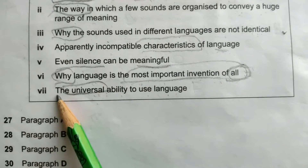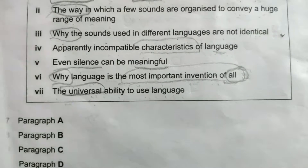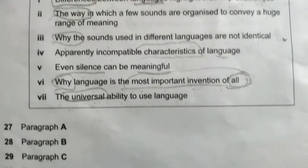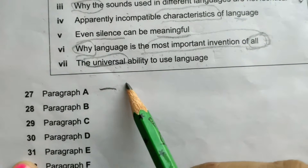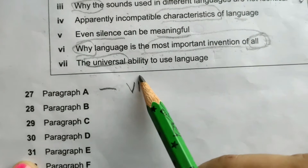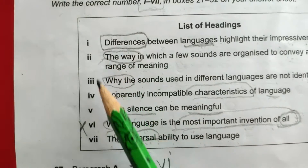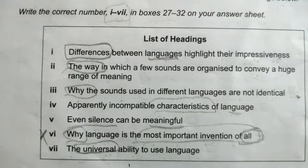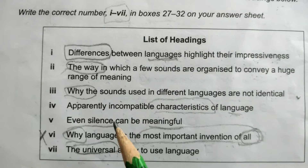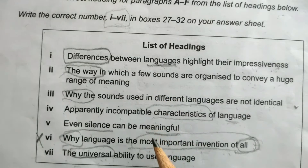The answer for question 27 is heading six: 'Why language is the most important invention of all.' Now eliminate this from your list. I'm reading the titles again and again so that we are able to match the proper heading for each paragraph. This way we are revising the headings for the next paragraph so they stay in our mind. Now move on to Paragraph B.